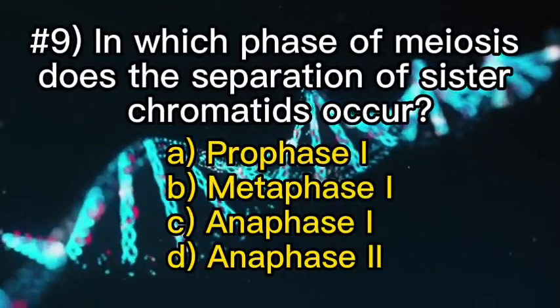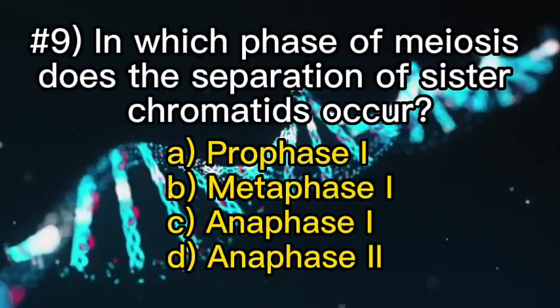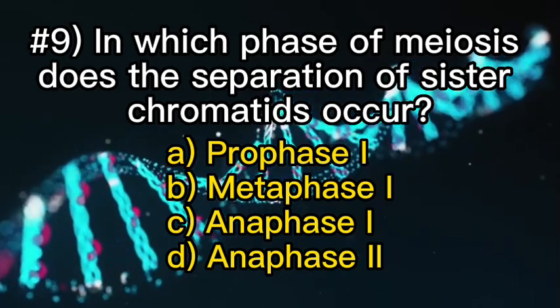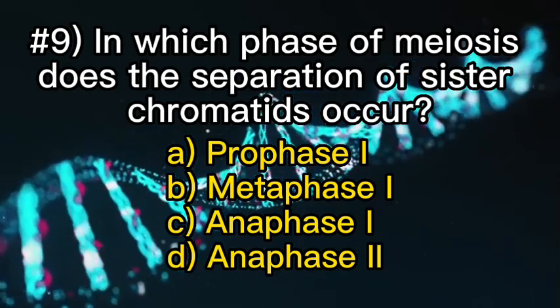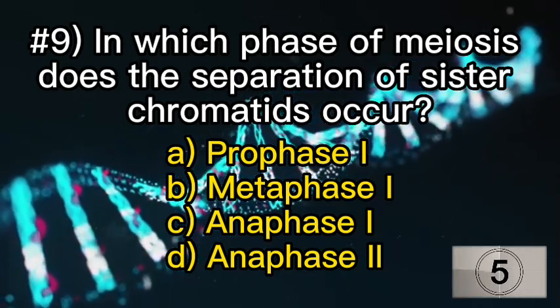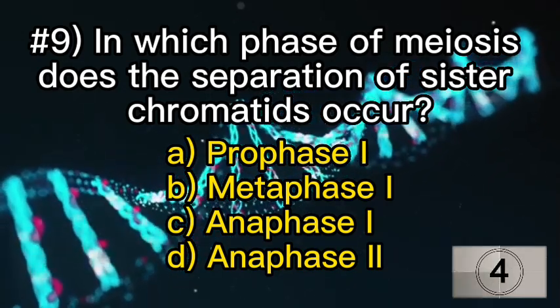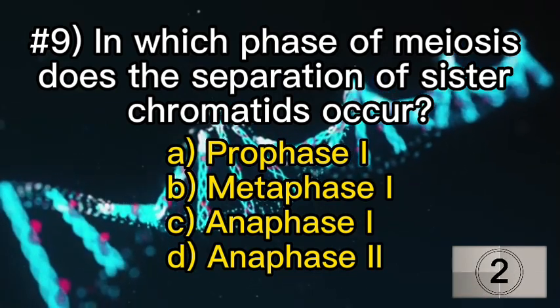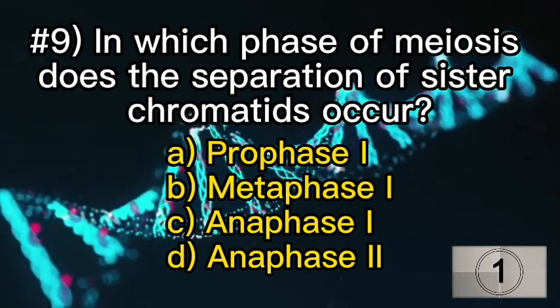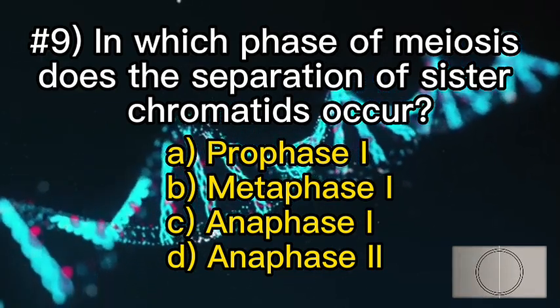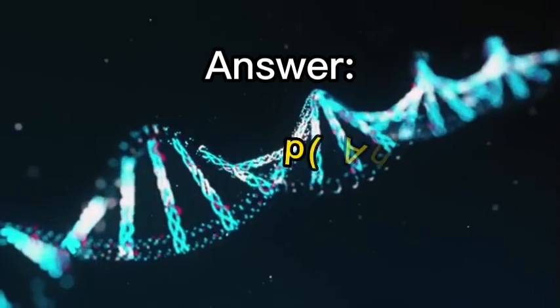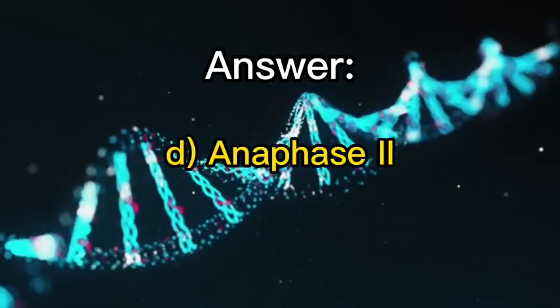Number nine: in which phase of meiosis does the separation of sister chromatids occur? D — anaphase II.